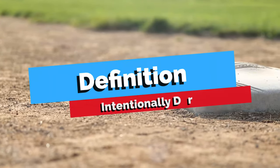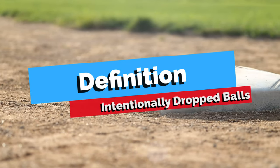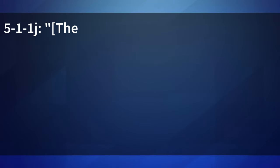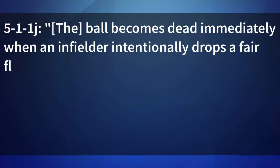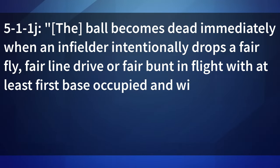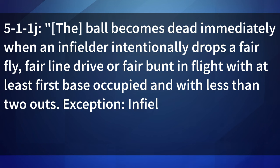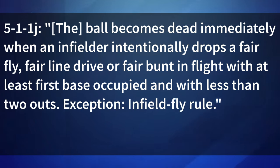To start, we need to understand the definition of an intentionally dropped ball and the intent of the rule. Rule 5-1-1J: the ball becomes dead immediately when an infielder intentionally drops a fair fly, fair line drive, or fair bunt in flight with at least first base occupied and with less than two outs. Exception: infield fly rule.